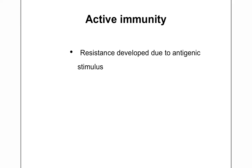Without antigenic stimulus, active immunity cannot be developed. The immune system of the person is actively involved — when the antigen enters, it activates the T or B cells. These activated T and B cells lead to the formation of either antibodies or sensitized cells which help in the elimination of the antigen. That is, active involvement of the immune system is required in active immunity.